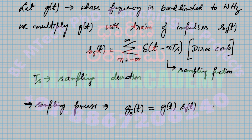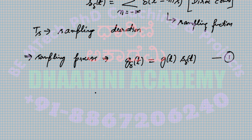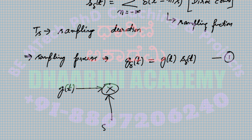We can represent the sampling process as: g(t) comes in as input to a multiplier, the sampling function s_δ(t) is the other input, and you get g_δ(t) at the output. This is a very easy process.